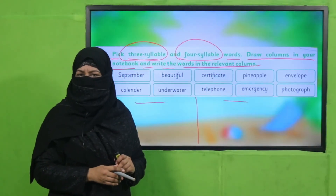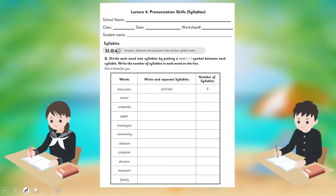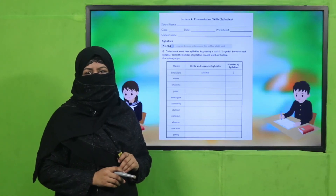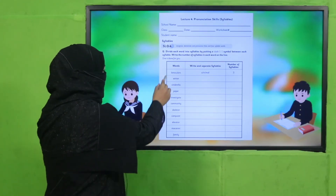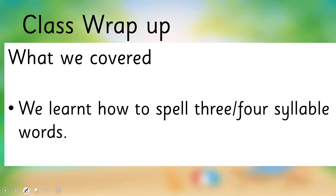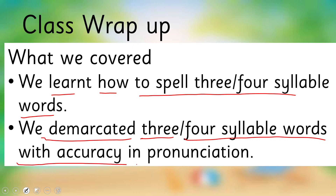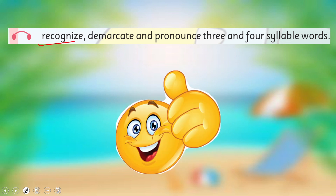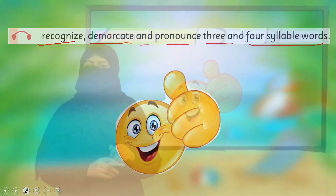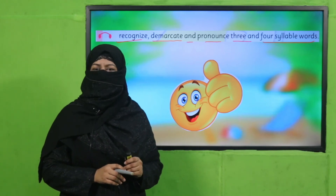Are you done? Good job! Now for homework, you will write more three and four syllable words. Here is a worksheet — my dear fellow teachers, the worksheet, lesson plan, and PowerPoint presentation links are given; click, download, and provide a printed worksheet to students for practice. Students, you have to write the syllables and number of syllables for the given words. Today we learned how to demarcate three and four syllable words with accuracy in pronunciation — our SLO was to recognize, demarcate, and pronounce three and four syllable words. That's it for today — keep learning, keep practicing, take very good care of yourself. Thank you and Allah Hafiz.